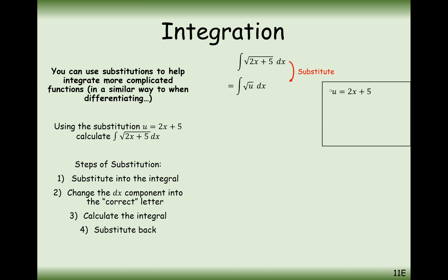The way we're going to do this is we're going to go back to our substitution. A lot of this question does revolve around this substitution. What we're going to do is create the dx by differentiating this substitution. So it's going to be du/dx is equal to 2. Rearranging this a little bit to make dx the subject, if we times by dx and divide by 2, we get dx equals a half du.